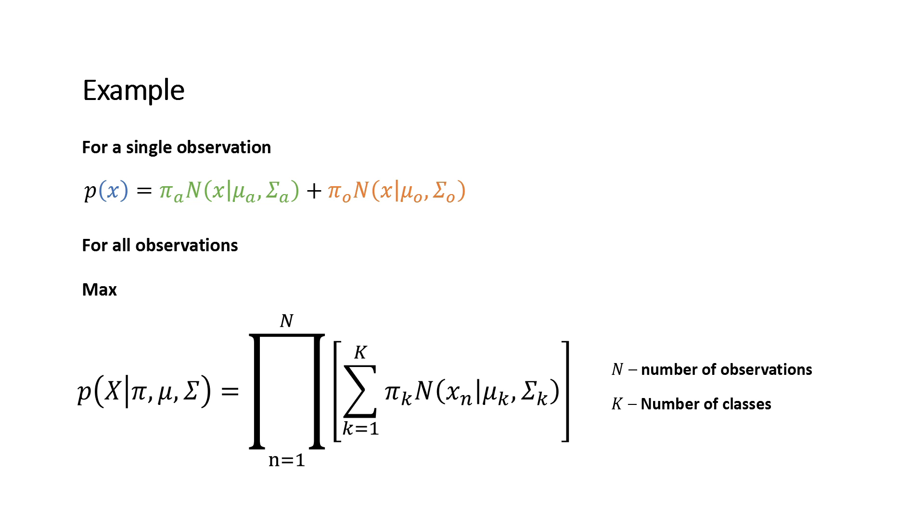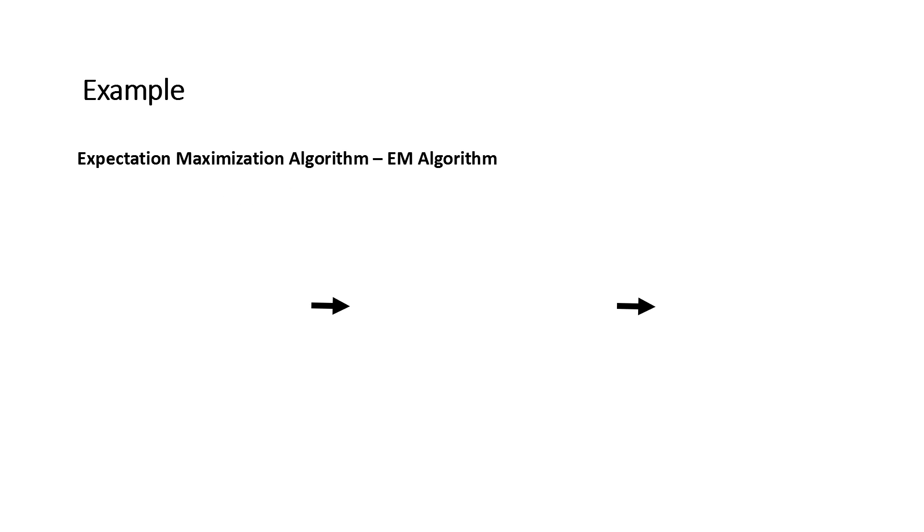Now to maximize this we need to find the derivative with respect to pi_k, mu_k, and sigma_k and set each to zero. We use the results of such in the expectation maximization algorithm.